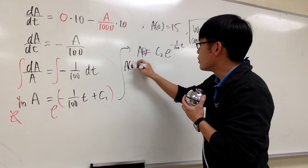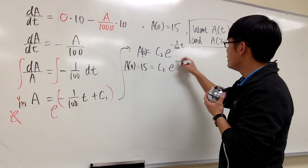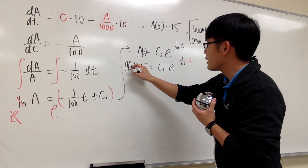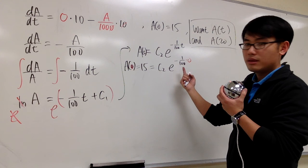That means C2 times e to the negative 1 over 100 times 0, this has to be equal to 15, where I just plug in 0 into T. And in another word, e to the 0 power is equal to 1, and we can just say C2 is equal to 15.